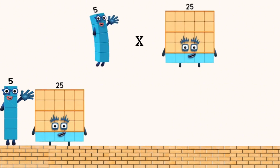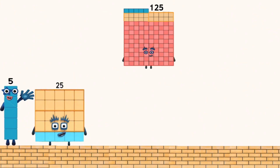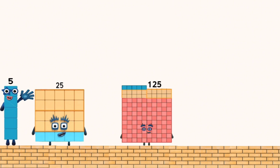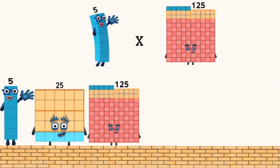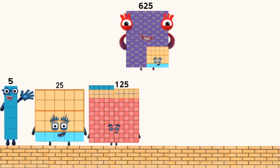Five times twenty-five equals one hundred twenty-five. Five times one hundred twenty-five equals six hundred twenty-five.